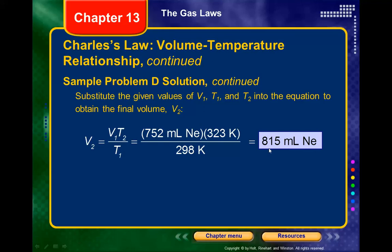Our new volume at the higher temperature will be larger, which makes sense. If we raise the temperature while keeping pressure constant, volume must increase so that the same number of collisions per area of the container occur — because we've sped up the molecules, we need more volume to keep pressure the same.